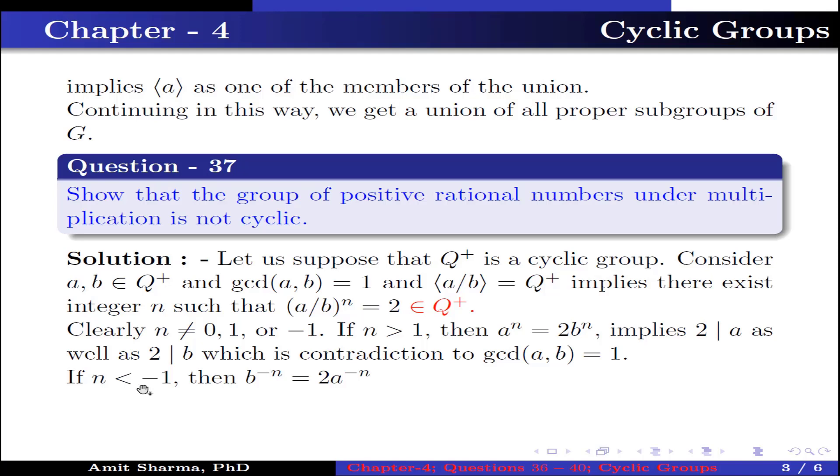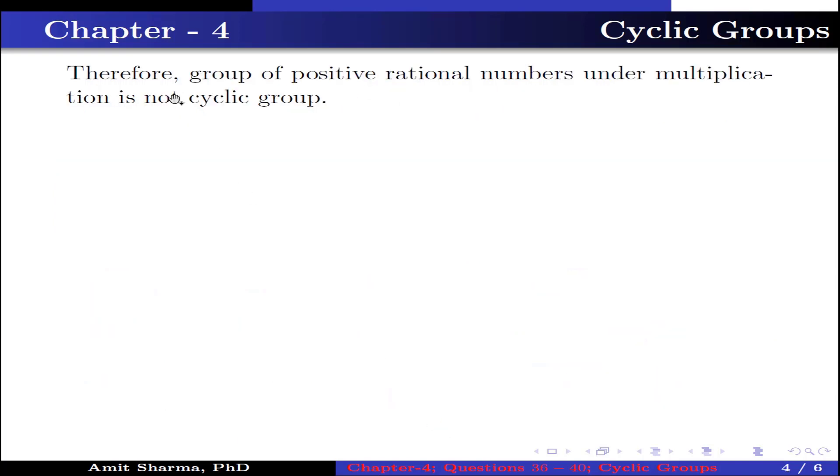Now let us check if we take n less than -1. Then b⁻ⁿ = 2·a⁻ⁿ. This further implies 2 divides a as well as 2 divides b, which is again a contradiction because gcd(a,b) = 1. Therefore our assumption is wrong. Therefore the group of positive rational numbers under multiplication is not a cyclic group.